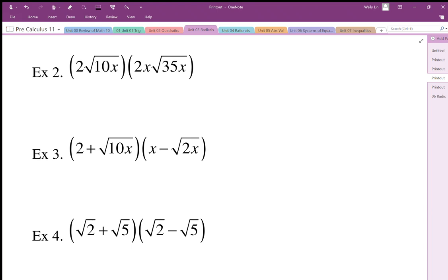For Example 2, we just make sure we can multiply these together by checking the indexes. The indexes match. There's no addition or subtraction here, so I don't need to distribute.